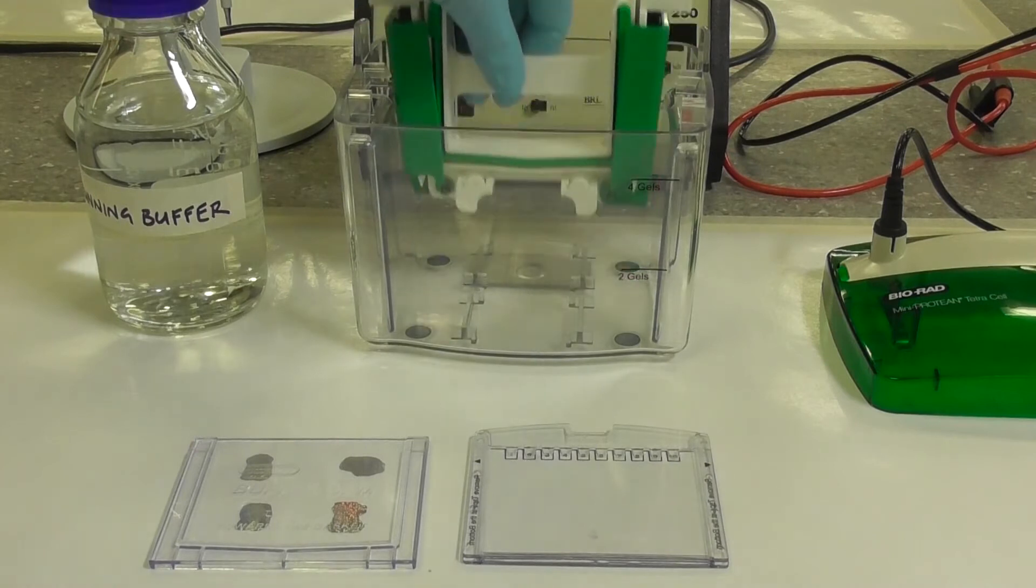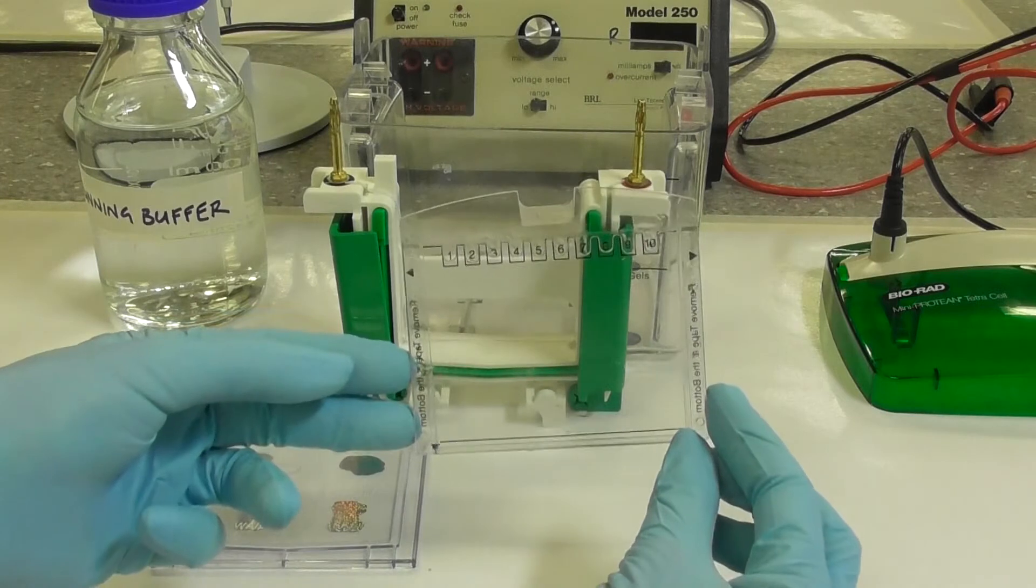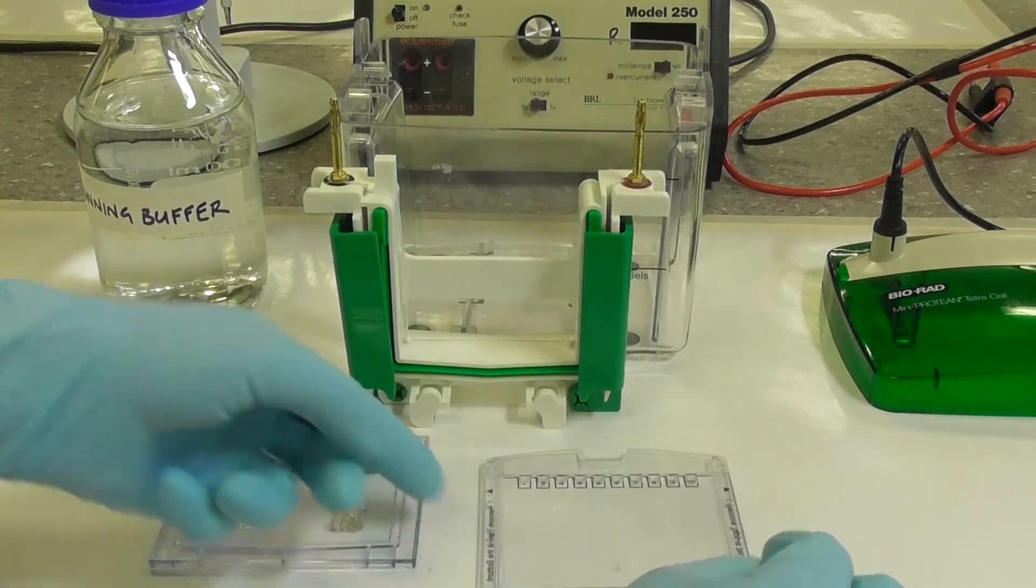Remove the inner electrode assembly unit. You will use your precast gel along with a buffer dam plate to complete the assembly of the electrode unit.